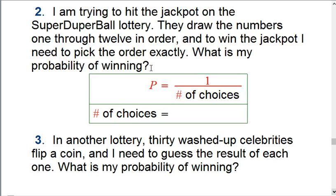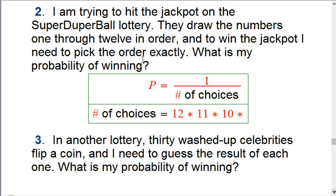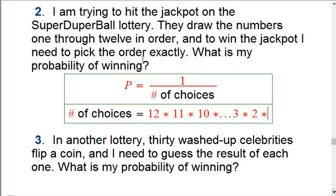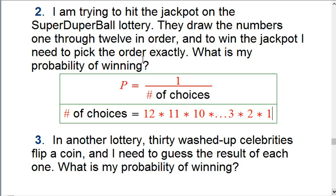Well, it turns out to be exactly the same principle as the previous problem. So the first one they pick could be 1 through 12. So there's 12 choices for that first one. Then they've picked one of the numbers already, and there's 11 choices left. And then they've picked two of the numbers. There's going to be 10 choices left, all the way down to 3 times 2. And then the last one, we could put in a times 1. It doesn't really do anything. If they've picked 11 of the 12 numbers, there's only one left.